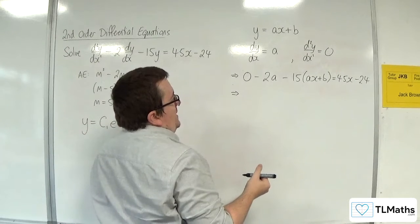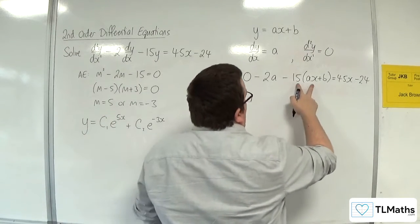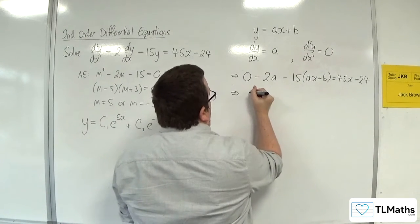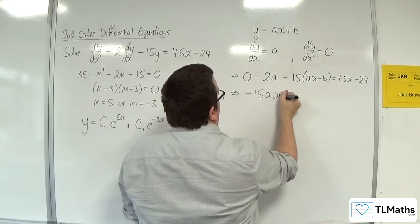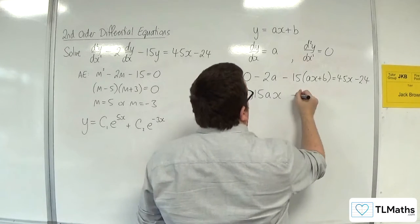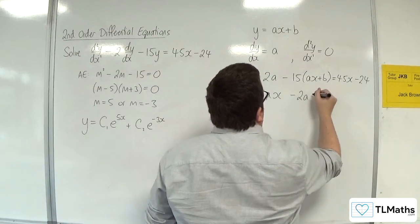Right, so we're going to tidy this up. So first of all, we've got the -15ax. Then we've got the -2a, and we've got the -15b.